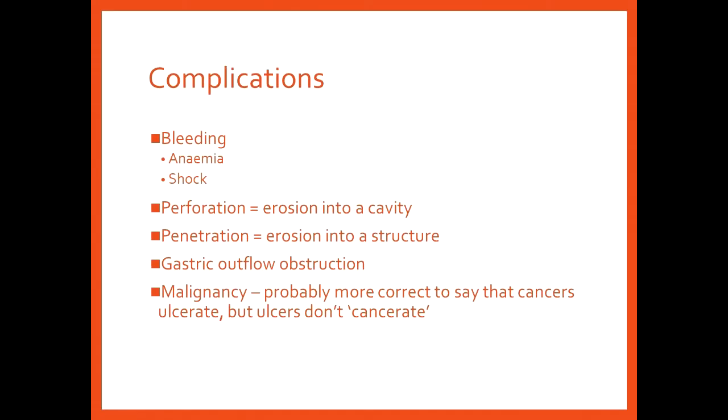So penetration is defined as erosion into another structure. And so we talked about the idea of that structure being an artery or an arteriole or venial or similar. You can also get, as you get inflammation at the edge of the ulcers, in rare cases, that can actually obstruct the gastric outflow. And then they can't actually absorb any of the food that they're having and they'll start vomiting and having a kind of a delayed dysphagia sort of a picture. And then in terms of malignancy, it's rather than saying that's a complication of the ulcer, it's more correct to say that cancer's ulcerate rather than ulcers cancerate.